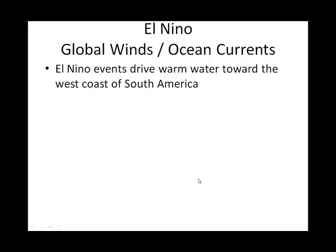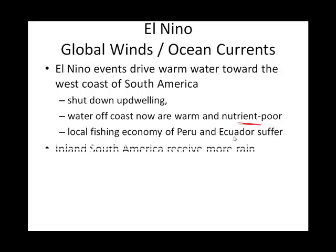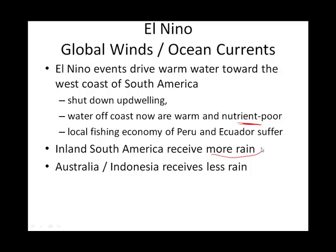To recap: El Niño events will ultimately drive warm water towards the west coast of South America. The upwelling shuts down, and that west coast isn't getting its nutrients from the bottom of the ocean like usual. The fishing economy suffers. Inland areas during an El Niño event generally receive more rainfall. Folks on the other side of the ocean basin gyre are actually drier — folks in Australia and Indonesia can experience droughts during El Niño events.